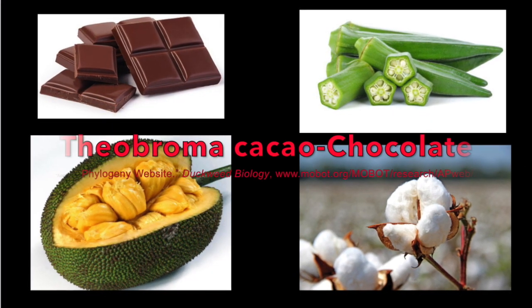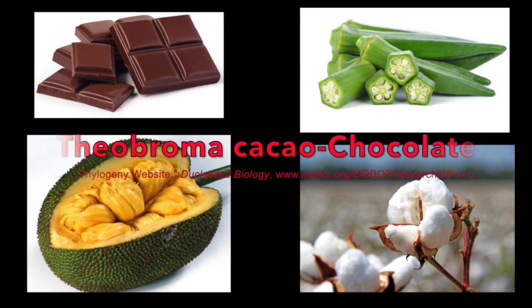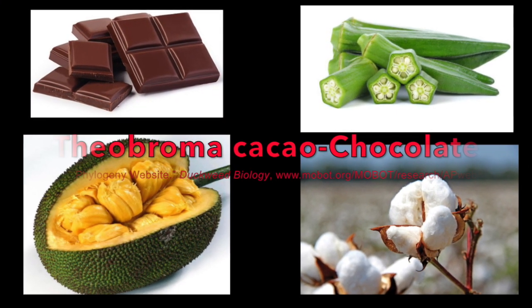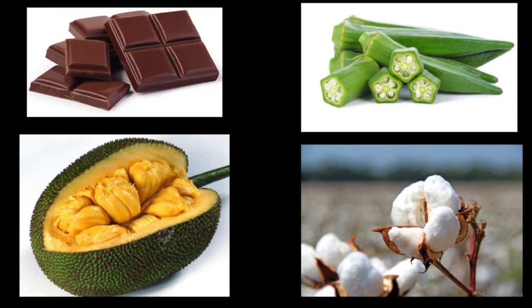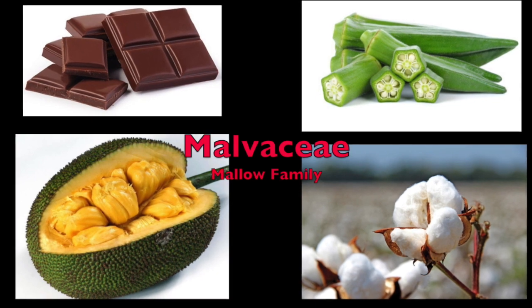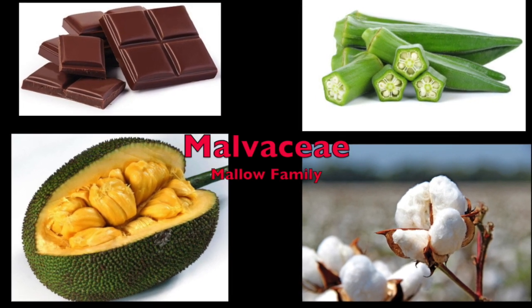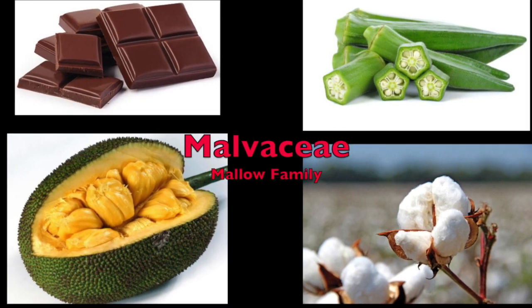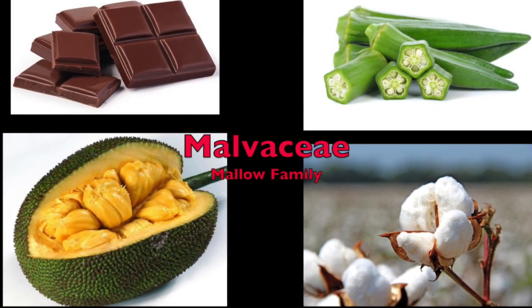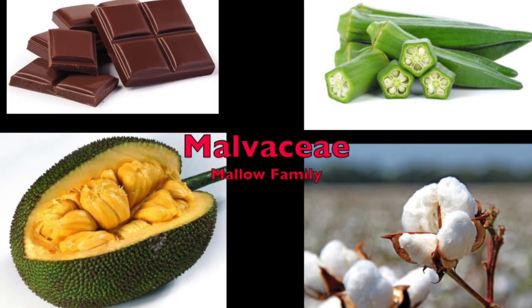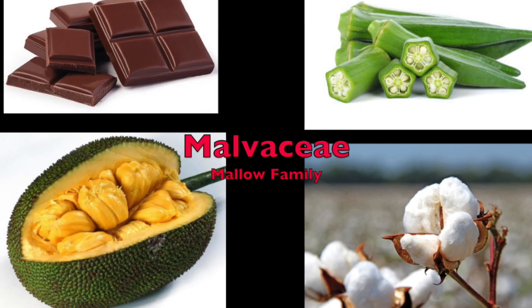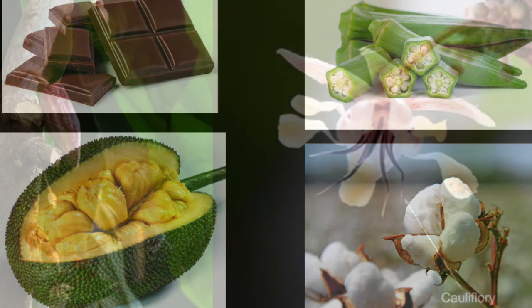Theobroma cacao, or chocolate, has been one of life's simple pleasures for centuries. Along with cotton, durian, and okra, chocolate is part of the Malvaceae family, or the Mallow family.